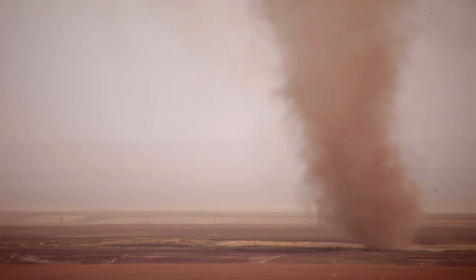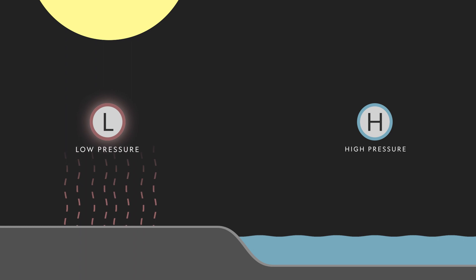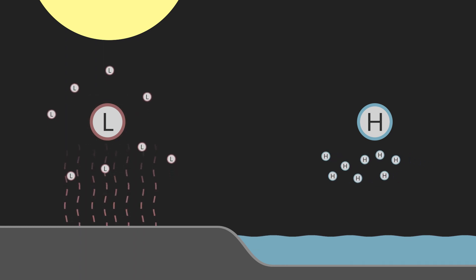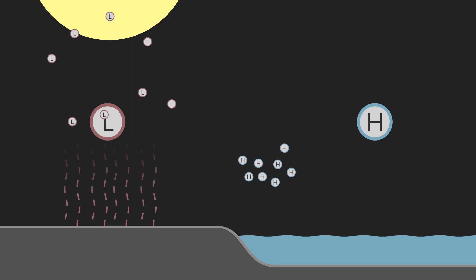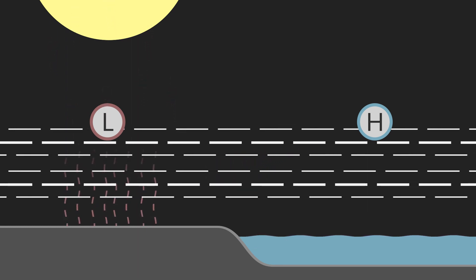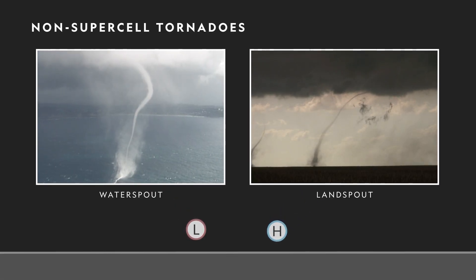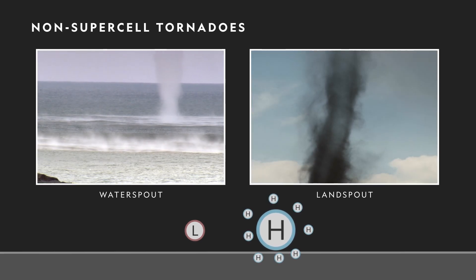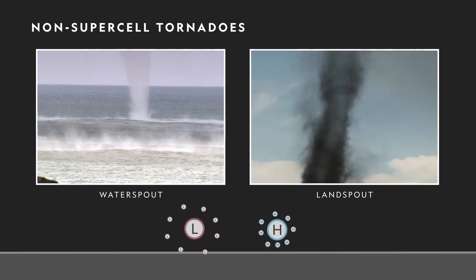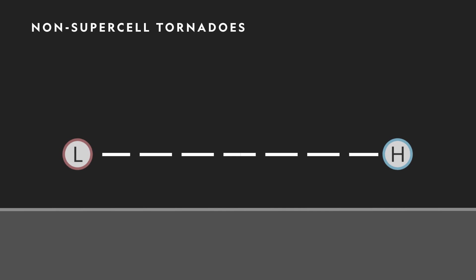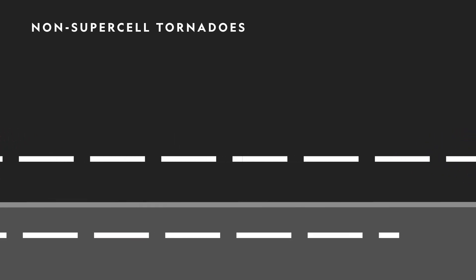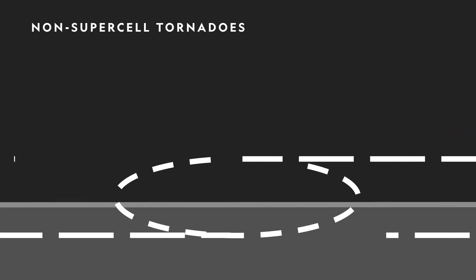There are many theories surrounding the formation of tornadoes. One key component they share is the presence of both high and low pressure air in a given space. Air particles from the area of high pressure move toward an area of low pressure, a movement that creates wind. Non-supercell tornadoes, such as water spouts and land spouts, begin when cool high pressure air and warm low pressure air are present, particularly near ground level. As air particles move horizontally from the high pressure area to the low pressure area, wind begins to pick up.